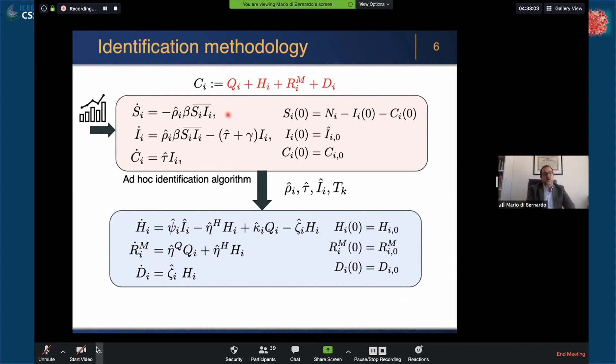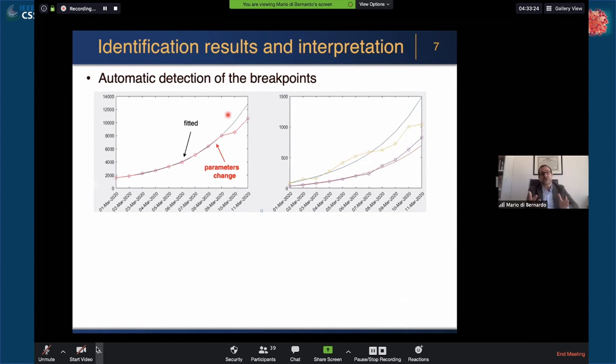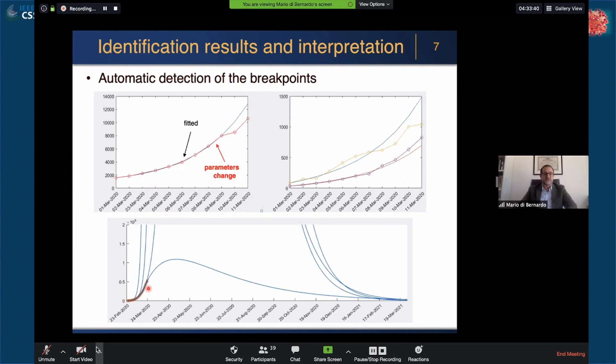We then go into the other set of equations and using the available data, in this case using a much simpler least squares identification algorithm, we estimate the rest of the parameters. We repeat this for all the regions. Of course we played also with the national data. Here you get the fitting, you see the parameter changes. These are automatically detected by the identification algorithm. We were very proud that some of our early predictions on the national level, the prediction on the 24th of March was unfortunately very close to what happened in the next weeks.